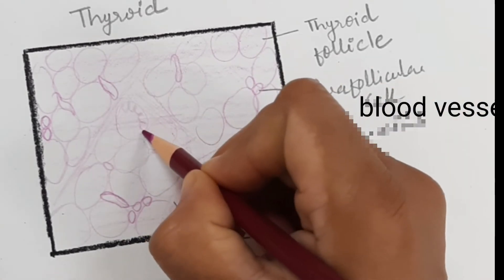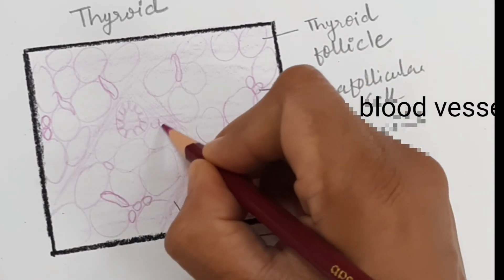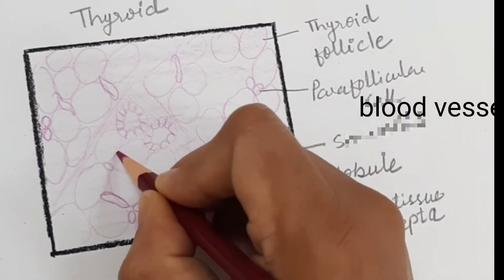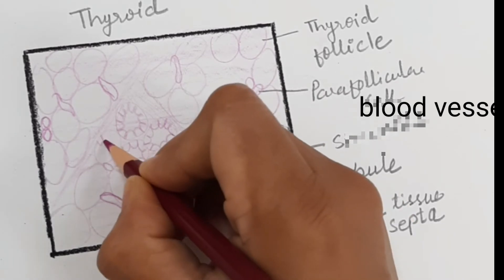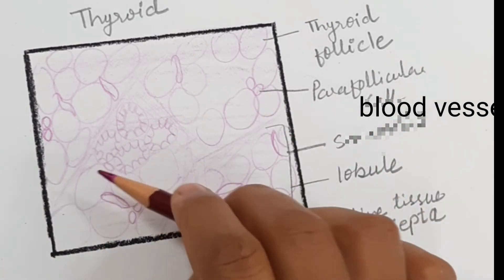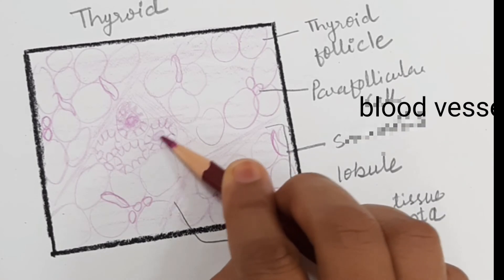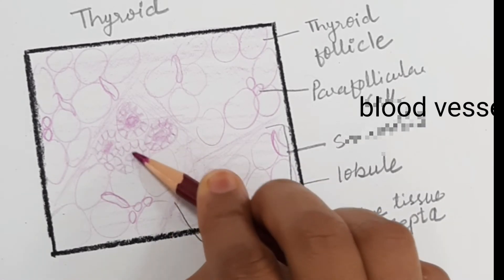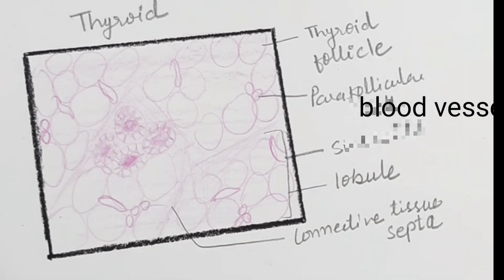The follicular cell is cuboidal in shape and rests on the basement membrane. In the center of the follicle there is a secreted material called colloid, which appears pink in color. The thyroid gland secretes the hormones triiodothyronine (T3) and tetraiodothyronine (T4).